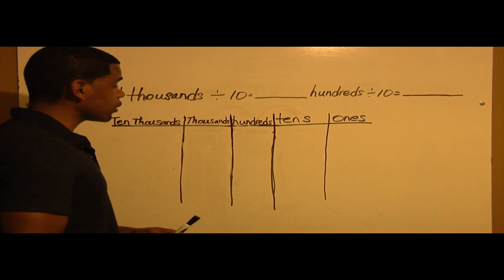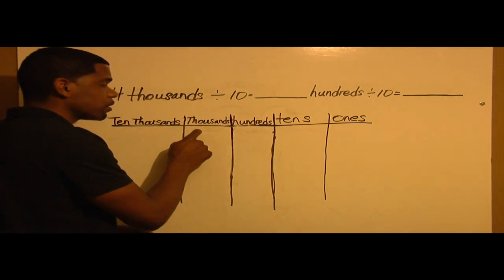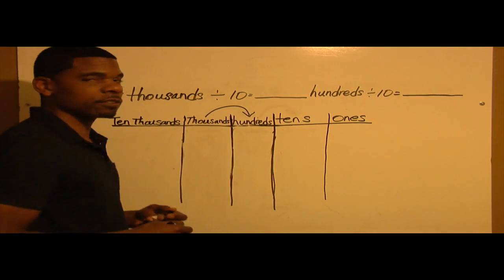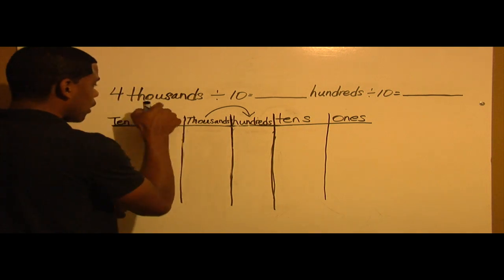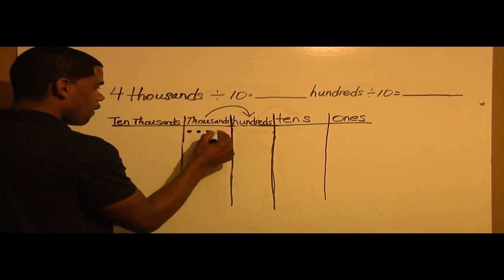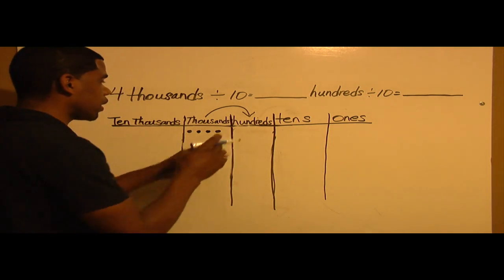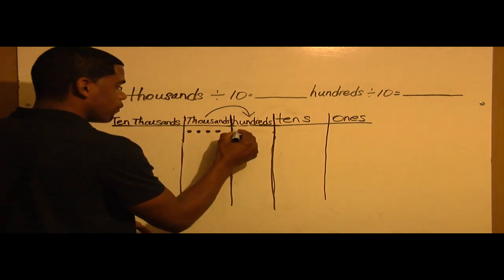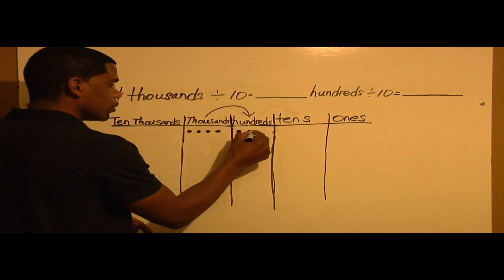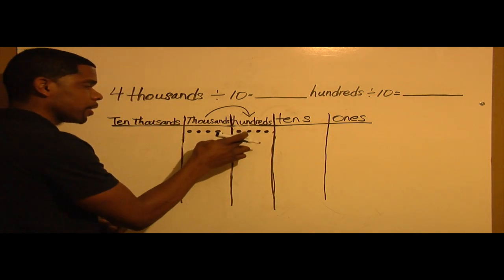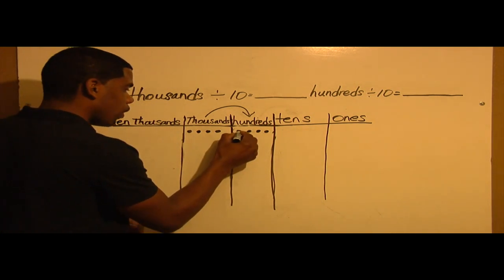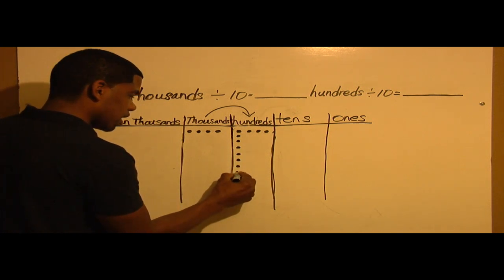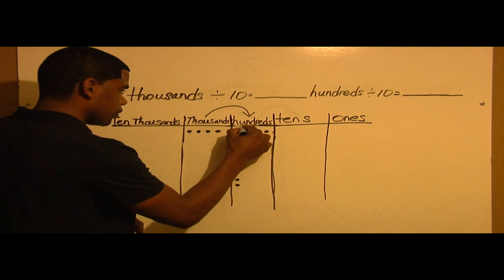What would our place value chart look like if I change each thousand to smaller units? I'm going to draw an arrow to the hundreds to make this into smaller units. So I have 4,000 — 1, 2, 3, 4. Here I'm going to represent hundreds so it can equal my 4,000. I'm going to add 4 groups like I did in the thousands: 1, 2, 3, 4. Within each group in the hundreds, I'm going to add 10: 1, 2, 3, 4, 5, 6, 7, 8, 9, 10. This is group number 1.